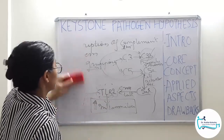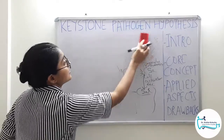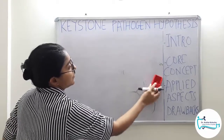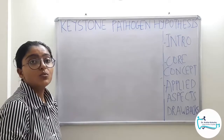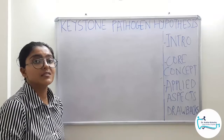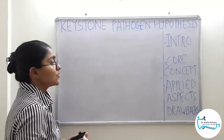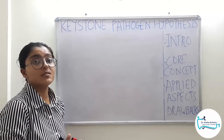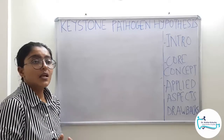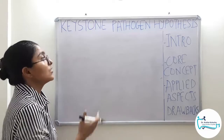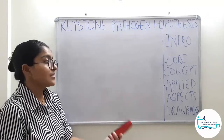Coming to the drawbacks: although this hypothesis tried to discuss genetic factors — which were not covered in the Ecologic Clarke Hypothesis — by touching upon the mice studies lacking C5a receptor or TLR2, ultimately everything is based on animal studies and not human studies. Implementing data from animal studies onto humans is not practical. This is the major drawback of the Keystone Pathogen Hypothesis. The suggestion is to study the same behaviour, same factors, and same disease activity of P. gingivalis on humans first, and then translate those findings into applied aspects.